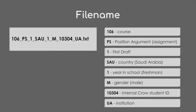One way to standardize your filenames is to include codes that reflect information in your metadata. In CROW, our standard filename looks like this, where the first three numbers stand for the course number — so 106. P-S is the assignment code for position argument. One stands for first draft. S-A-U is the code for Saudi Arabia, that's the student's country of origin. Another number is for year in school, so freshman. M is for gender, in this case male. And 10304 is an internal CROW ID. And UA is, of course, for the University of Arizona.